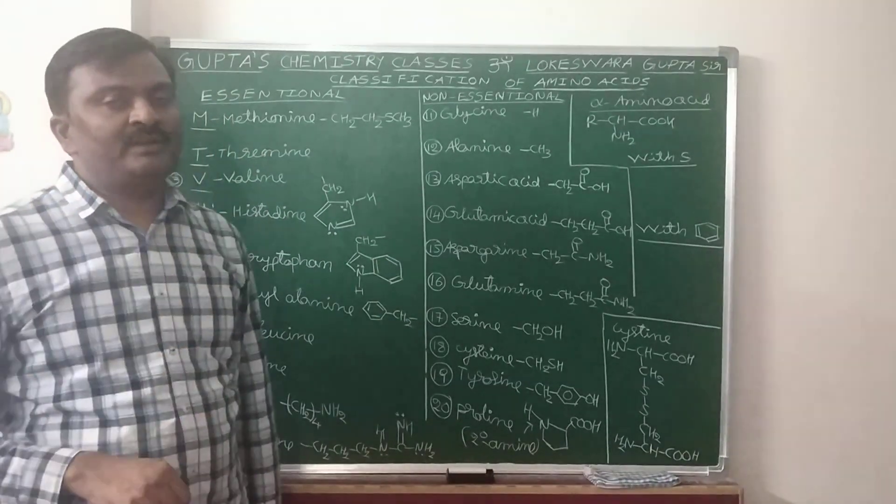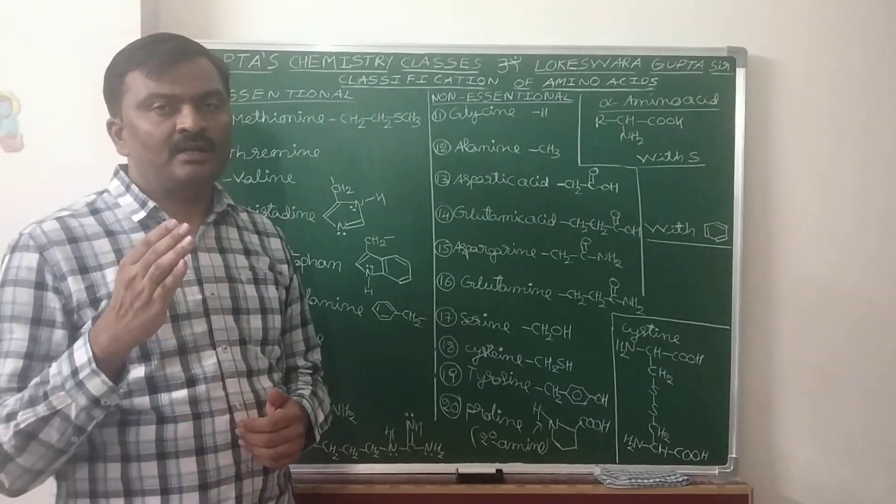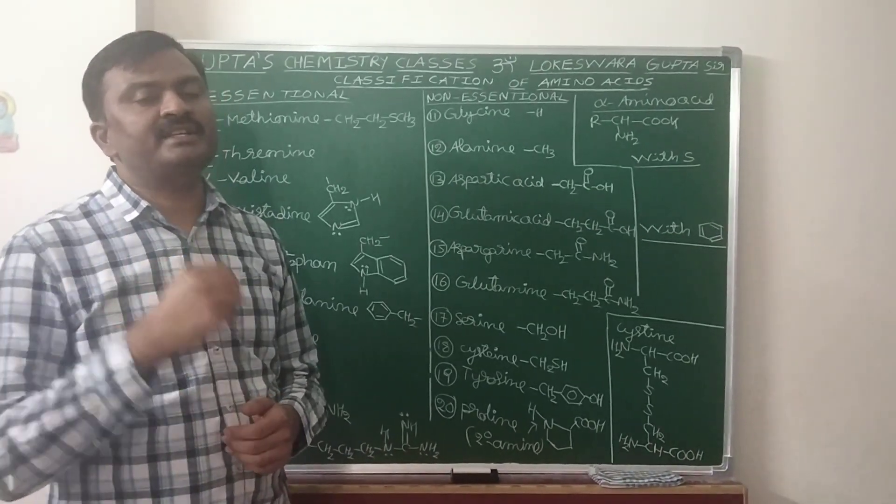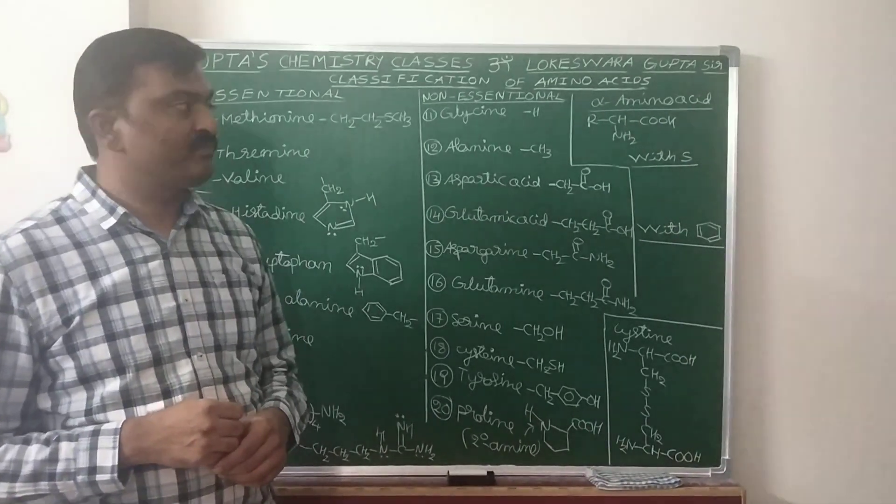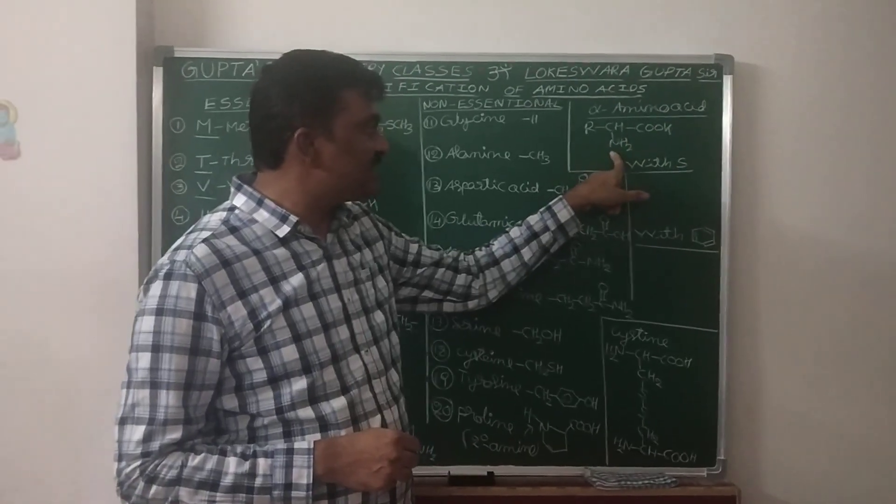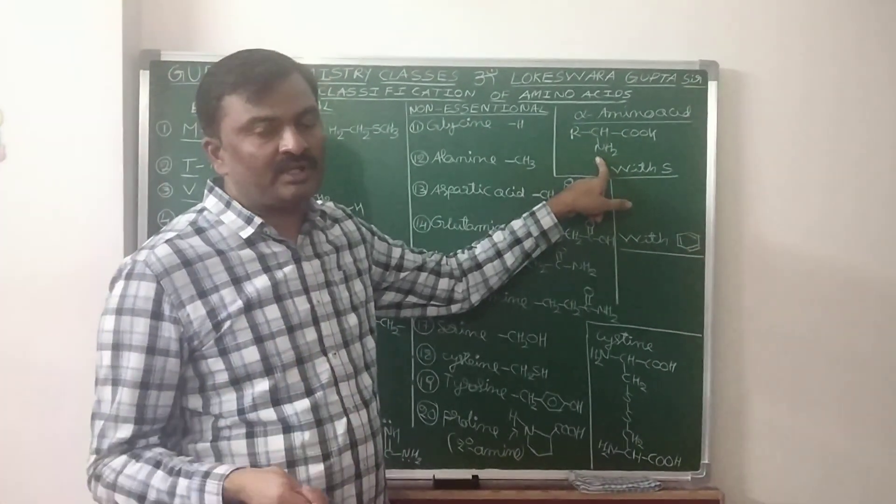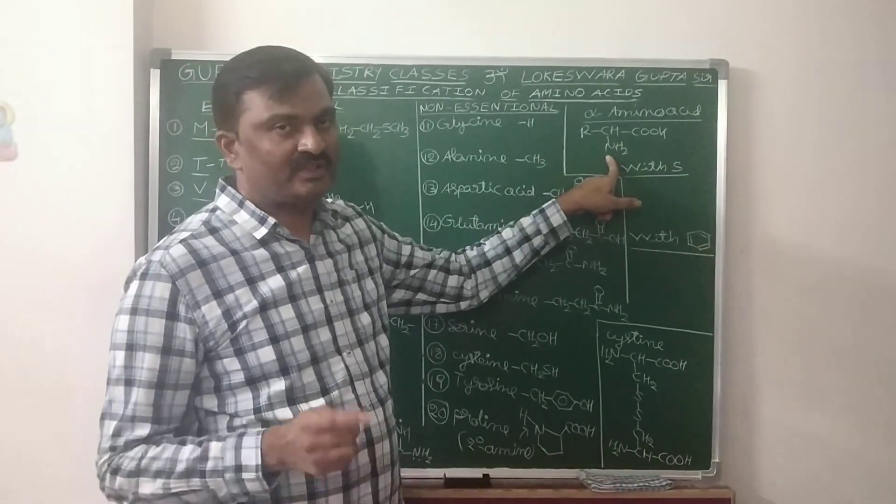Alpha amino acids can be classified into neutral, basic and acidic alpha amino acids. Neutral: if equal number of acidic COOH and basic NH2 groups present, then those are called neutral alpha amino acids.